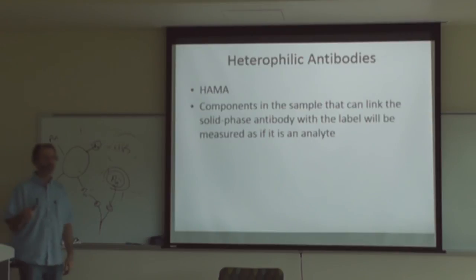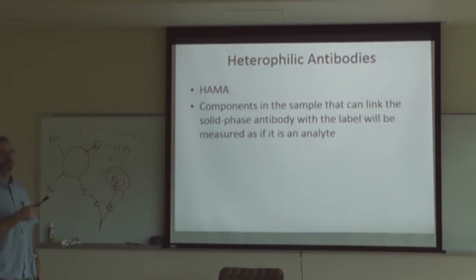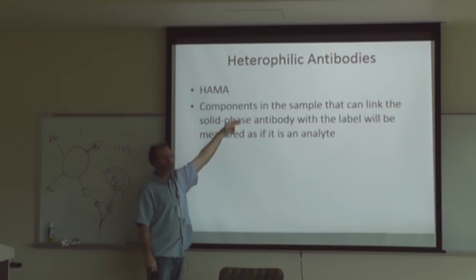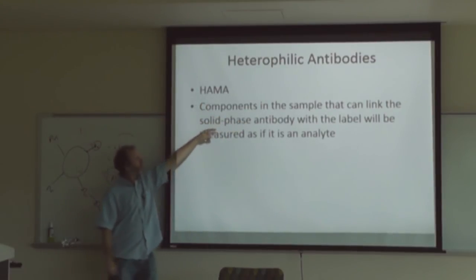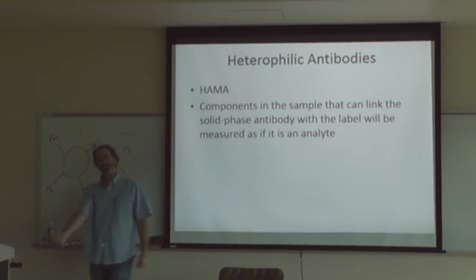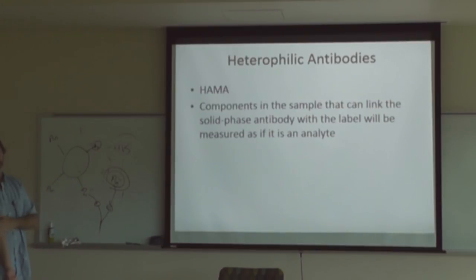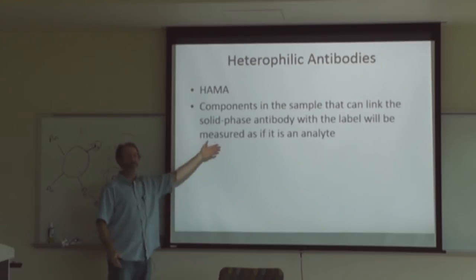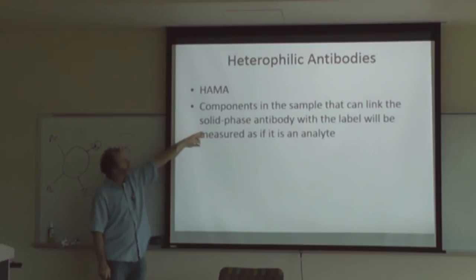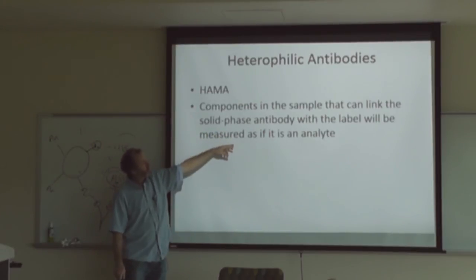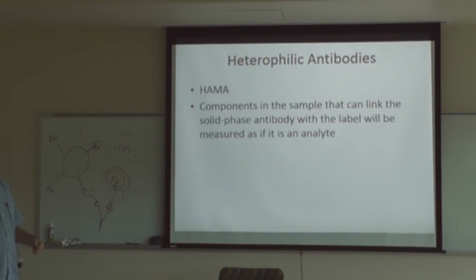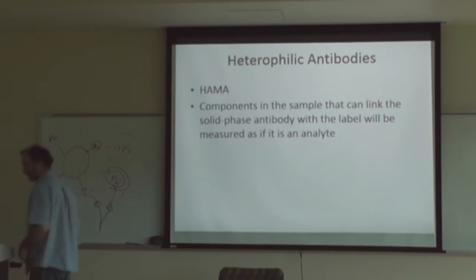Heterophilic antibodies can interfere with immunoassays. One of the most common are HAMAs — human anti-mouse antibodies. If a patient has been treated with a monoclonal antibody therapy, they may develop antibodies against mouse antibodies. These anti-mouse antibodies in the patient's serum will react with the monoclonal antibodies used in many tests, causing interference. Components in the sample that can link the solid-phase antibody with the label will be measured as if they are analyte, so you should review patient history to assess the likelihood of HAMA interference.